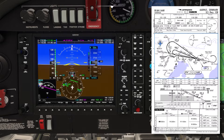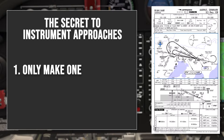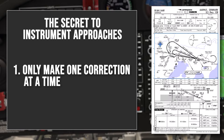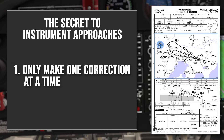Whenever you're flying any instrument approach there are two key points to remember. Firstly, whenever you need to make a correction you must only correct either the lateral part or the vertical part. So in the case of the ILS you'll only make a correction to either the localizer or the glide slope. Never try to correct both at the same time, otherwise you'll probably lose track of everything and end up needing to go around.